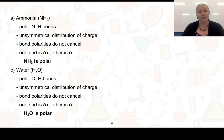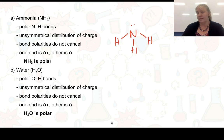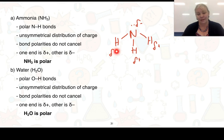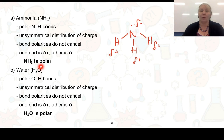For ammonia (NH₃), nitrogen is 3.0 and hydrogen is 2.1, so there are polar bonds. We draw delta negative on nitrogen and delta positive on each hydrogen. The charge distribution is unsymmetrical — there is a negative end at nitrogen and a positive end toward the hydrogens — so the bond polarities do not cancel out. Therefore, NH₃ has polar bonds and is a polar molecule.